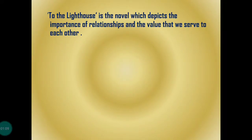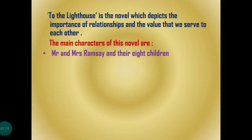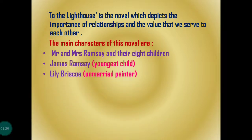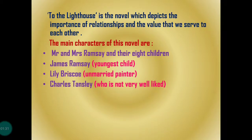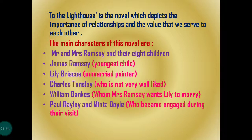To the Lighthouse is a novel which depicts the importance of relationships and the value that we serve to each other. The main characters of this novel are Mr. and Mrs. Ramsey and their eight children. James Ramsey, who is the youngest child; Lily Briscoe, who is an unmarried painter; Charles Tansley, who is not very well liked; William Banks, whom Mrs. Ramsey wants Lily to marry; and Paul Raleigh and Minta Dalloway, who became engaged during their visit.